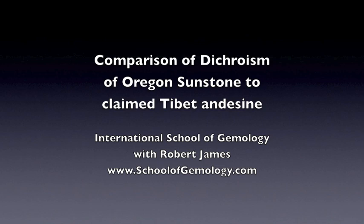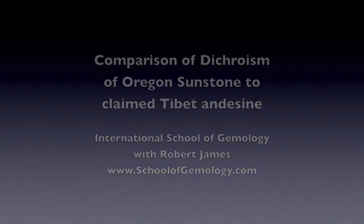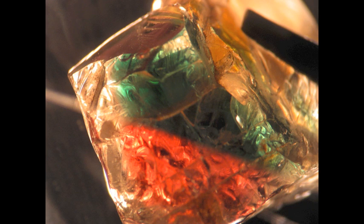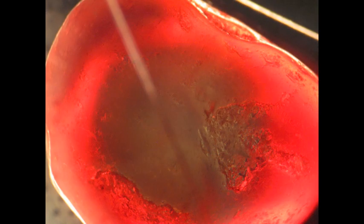Welcome to the International School of Gemology's comparison of dichroism of Oregon Sunstone to the claimed Tibet andesine. It's always been known that the Oregon Sunstone has a very unique reaction to a dichroscope, actually unusual to anything else in the world. And the interesting thing is, for all the claims from the Tibetan mining people that their material is the same as the Oregon material, optically it is totally different through a dichroscope.